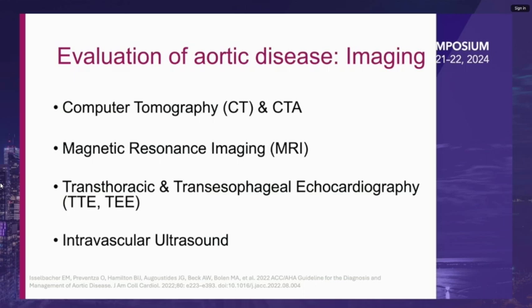MRI has better temporal resolution, allows for valvular and ventricular function assessment, and has no radiation; however, longer acquisition times and less availability make it a less favorable modality. Trans-thoracic and transesophageal echo provides excellent temporal and spatial resolution, is portable, and allows for real-time assessment of ventricular and valvular function with no radiation, though TEE has limited ability to evaluate the aortic arch. Intravascular ultrasound has high resolution and allows for intraluminal imaging to guide endovascular management, potentially reducing contrast and radiation exposure, but it is expensive and not widely available.